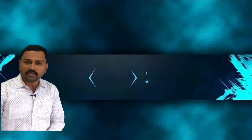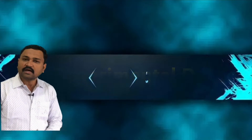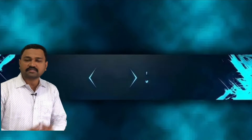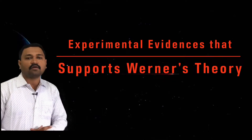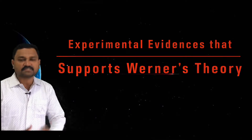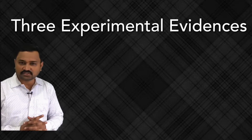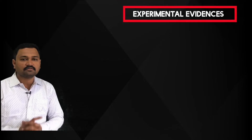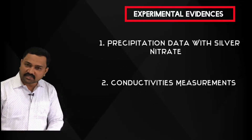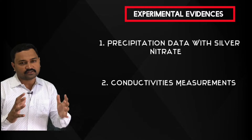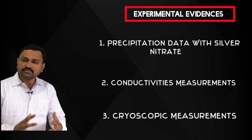Whenever any theory or postulates are written, they are always supported by experimental data. In today's lecture we are going to learn about three important experimental evidences that support Werner's coordination theory. These are: first, the precipitation data with a silver nitrate solution; second, the conductance measurement of the complex solution; and third, the cryoscopic measurement for the complex solution.